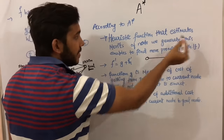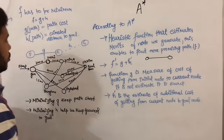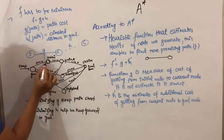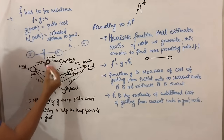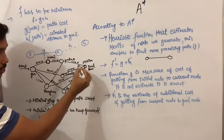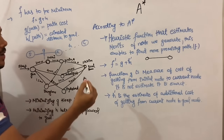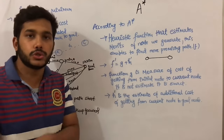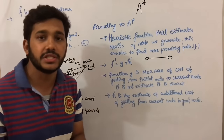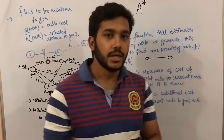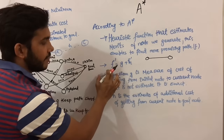The heuristic function f estimates the merit of a node to find a more promising path. Suppose we are searching any path and we have explored a particular node — we can get what are the merits of this node and how we will get to our goal node. This generates a more promising path. In heuristic function it provides a good solution, but A* tries to find the best solution.